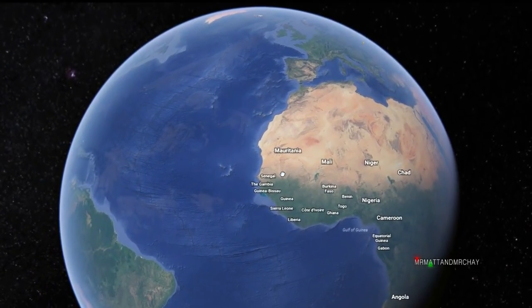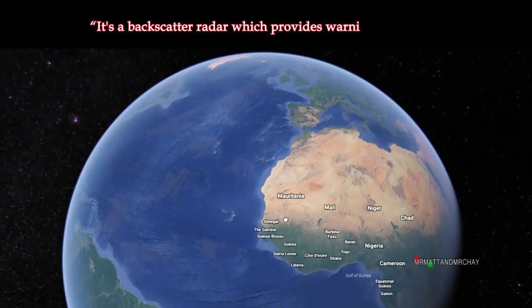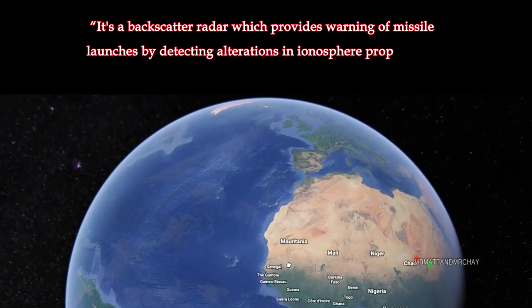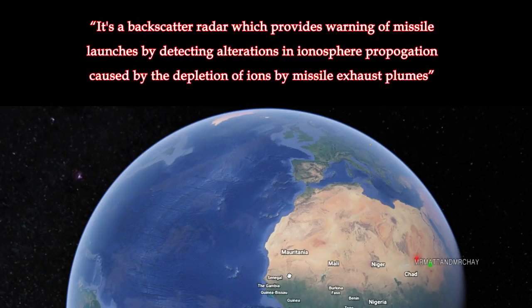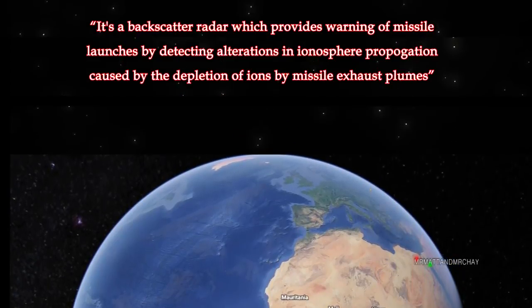The official information is that it's a backscatter radar, which provides warning of missile launches by detecting alterations in ionosphere propagation caused by the depletion of ions by missile exhaust plumes. Good luck with working all that out, but here I've done it for you!